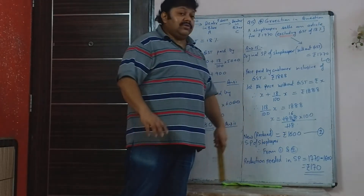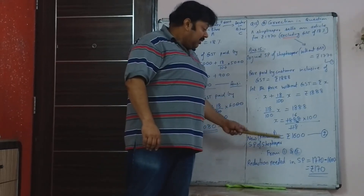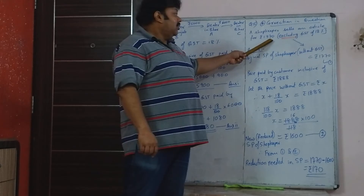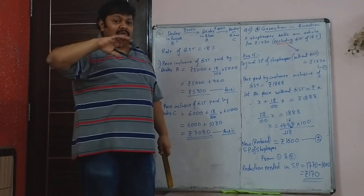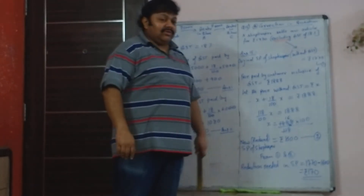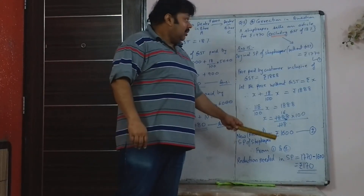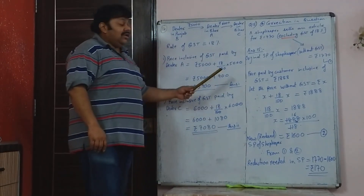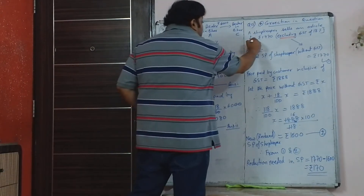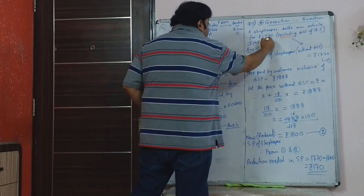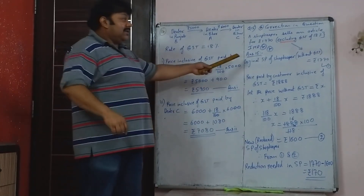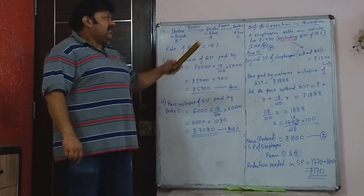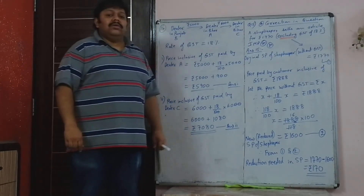We are asked what is the reduced price at which the shopkeeper will sell the article — how much reduction is required. The original price was Rs. 1,770 (the mark price), but the reduced price is Rs. 1,600. So Rs. 1,770 minus Rs. 1,600 means Rs. 170 reduction has to be made in the price. Mark this sum as important — it is a different type of sum, so practice it.